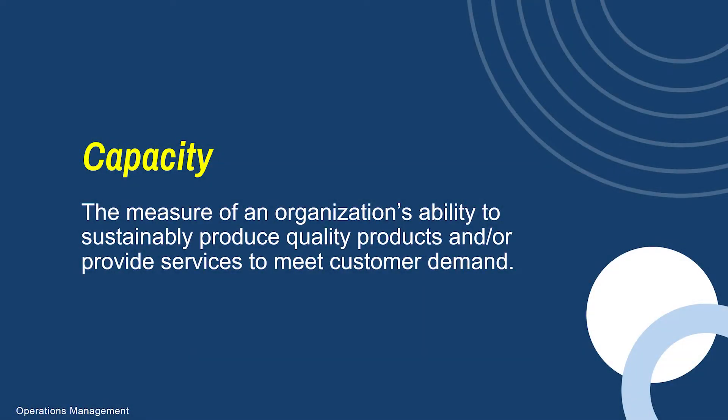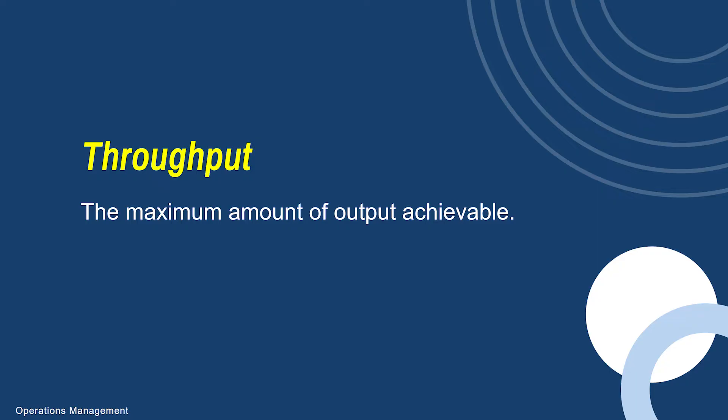It's just like the technologies we have — computers and cell phones — they have limited bandwidth, and so do the organizations that produce products. Capacity is simply the measure of an organization's ability to sustainably produce products or services based on customer demand. This is based on what we call our maximum throughput, or maximum rate of output. If we can only produce 100 units a day and we're producing 100 units a day, we're operating at full capacity — 100% capacity utilization.